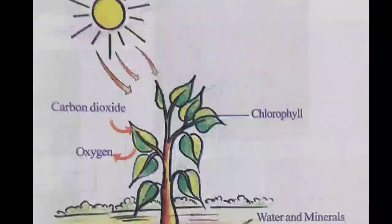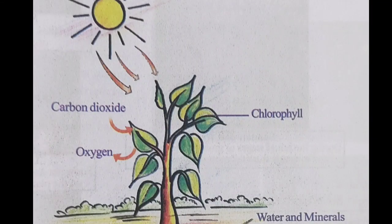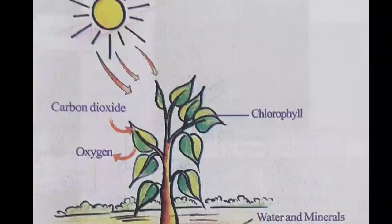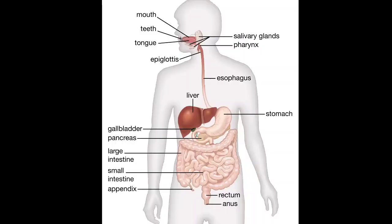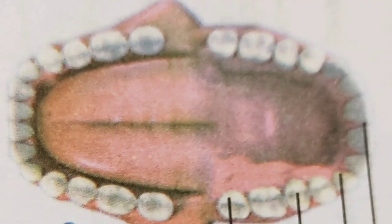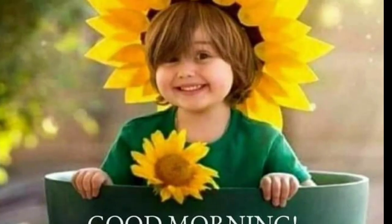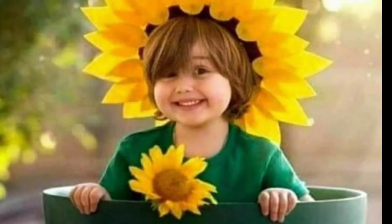Dear students, the significant learning outcomes of the new unit are: to know the importance of photosynthesis, different stages in the process of nutrition, the parts of the digestive system, importance of dental care, mechanism by the body to eliminate waste, and maintaining body hygiene.